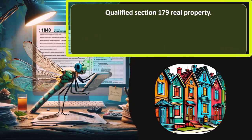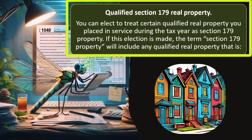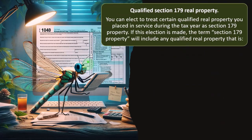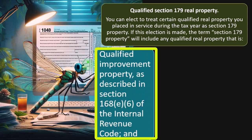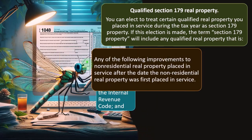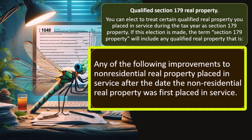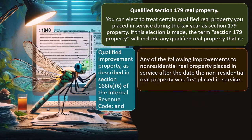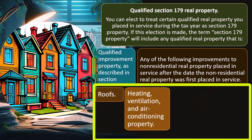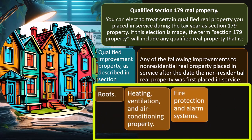Qualifying Section 179 real property: you can elect to treat certain qualified real property placed in service during the tax year as Section 179 property. If this election is made, Section 179 property will include any qualified real property that is qualified improvement property as described in Section 168(e)(6) of the Internal Revenue Code, and any of the following improvements to non-residential real property placed in service after the date the property was first placed in service: roofs, heating, ventilation, and air conditioning property, fire protection and alarm systems, and security systems.